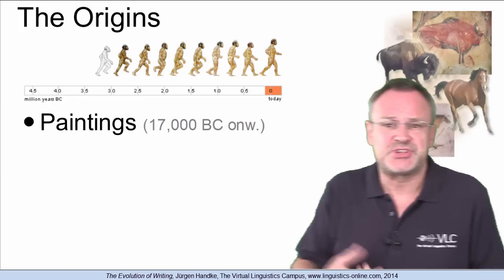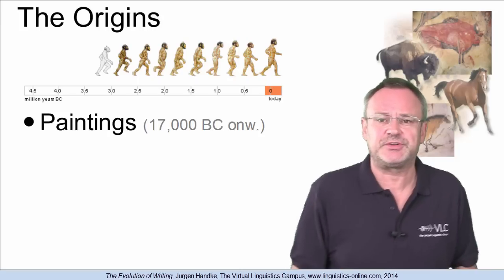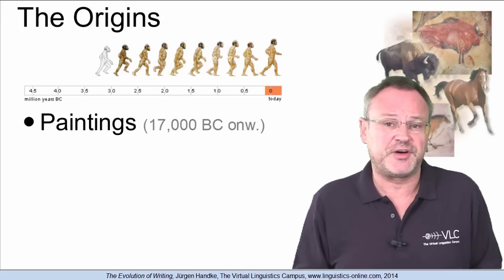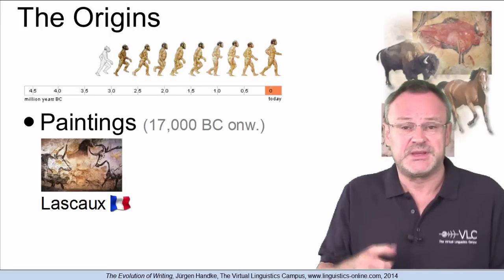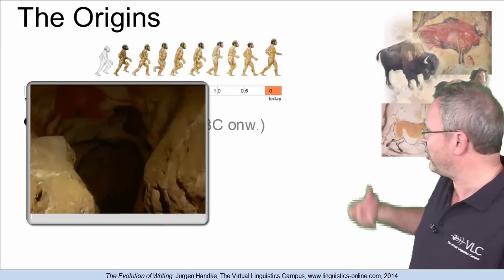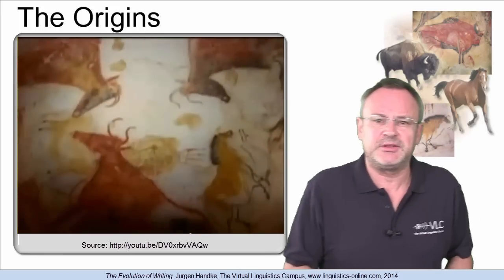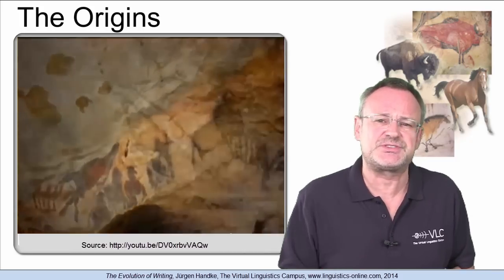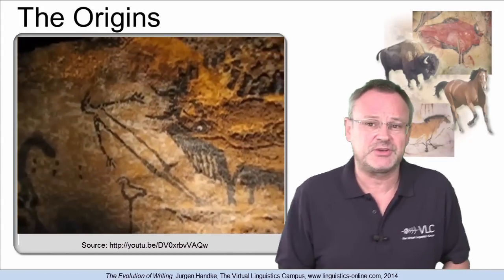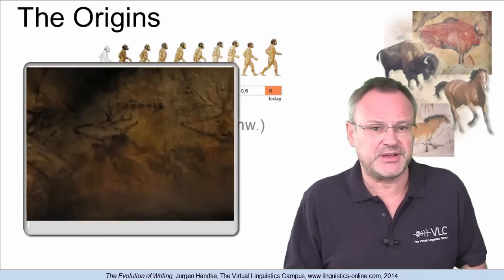Paintings done some 17,000 years ago depicting hunting scenes and animals of the time are the first documents our forefathers left behind for others to see. Lascaux is the setting of a complex of caves in southwestern France famous for its paleolithic cave paintings. These paintings are estimated to be 16,000 years old and primarily consist of realistic images of large animals, most of which are known from fossil evidence to have lived in the area at the time.